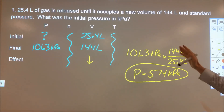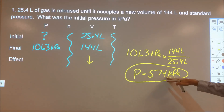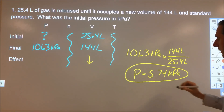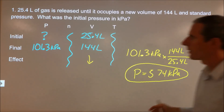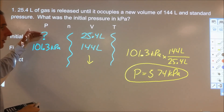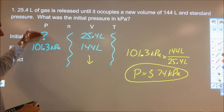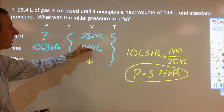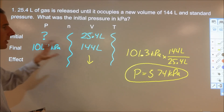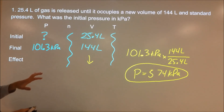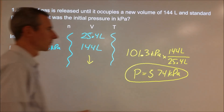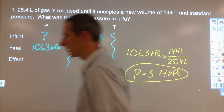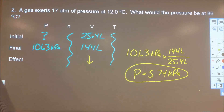Checking sig figs — we've got three and three, so three sig figs is good, and that's our final answer. Going back to check: we started with 574 kilopascals, it drops to standard pressure, and the volume went from 25.4 liters to a much larger 144 liters — everything matches up and makes sense. Let's do a couple more.